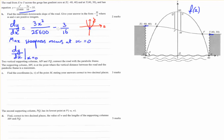Well, looking here, if we sub in x as 0, we get 3 times 0 squared on 25,600, minus 3/16ths. So that disappears, and our maximum downward slope is negative 3 on 16. And we've given the answer in the correct form. We've got a negative out the front and two positive integers. And that's our maximum downward slope.